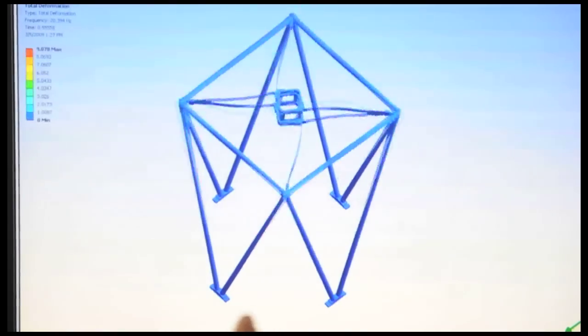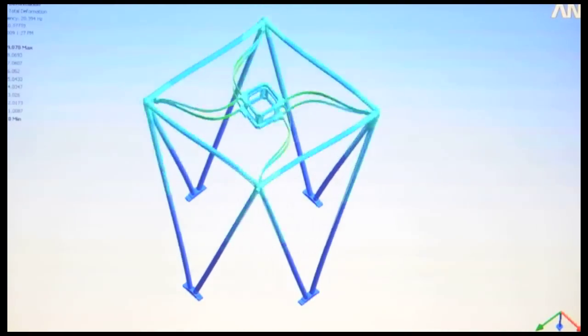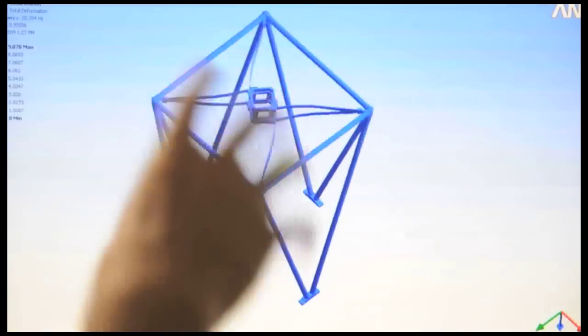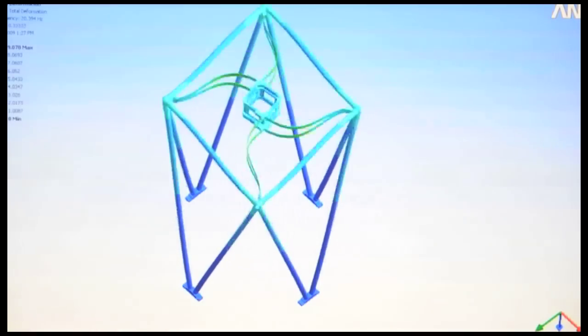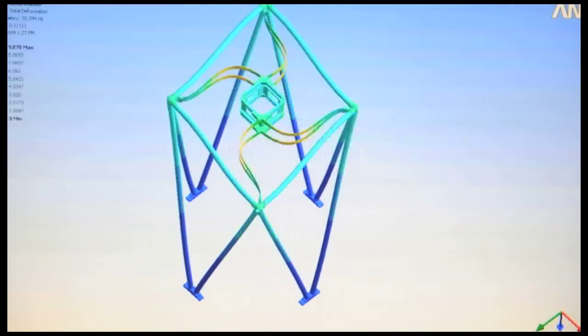We use finite element analysis to look at the vibrations and deflections of the different components of the telescope. Here I'm showing the first mode, which is rotation. And this shows a large exaggeration of the deflections we actually see.